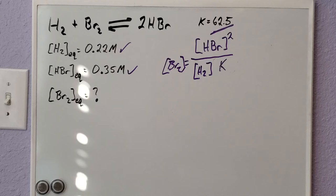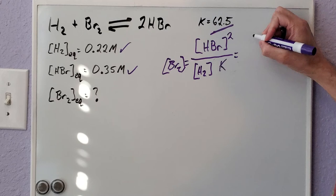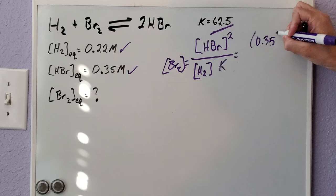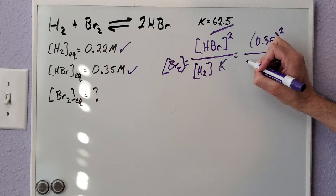The only thing for these types of problems that a lot of students tend to forget is the square. After that, it's nothing more than a plug and chug problem. We know that our HBr is 0.35, and because the coefficient in the balanced equation is 2, you need to remember to square that value. We know that H2 is 0.22 molarity.